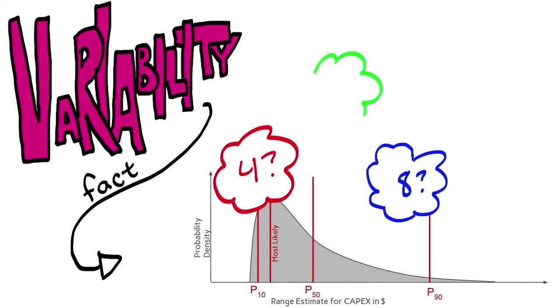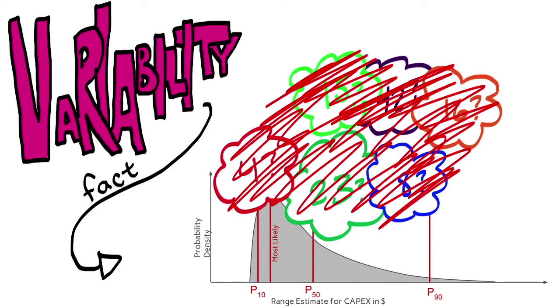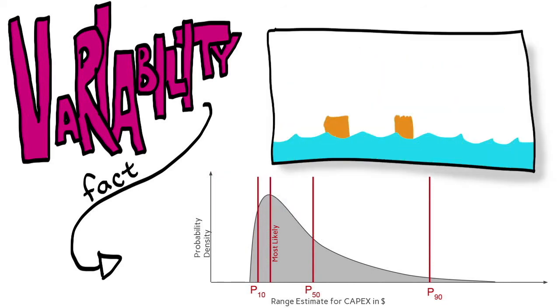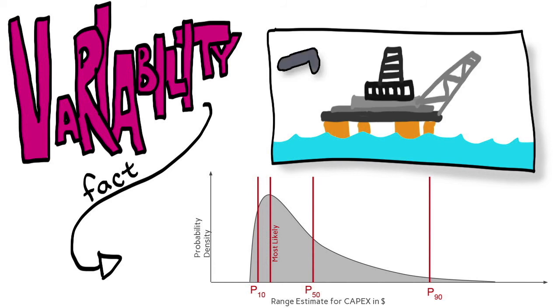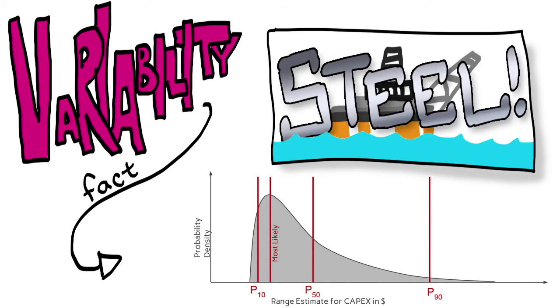Variability is a fact that affects the estimate, but that we cannot put a precise number against. For example, in a typical offshore platform, we know there is significant steel. That is a fact.